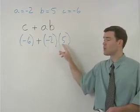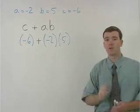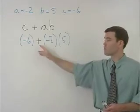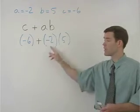Now we have negative 6 plus negative 2 times 5. And remember from your order of operations that you want to multiply before you add.